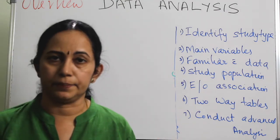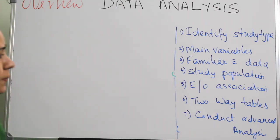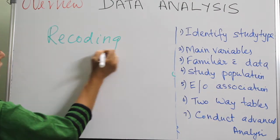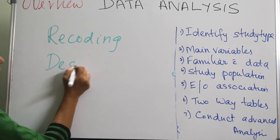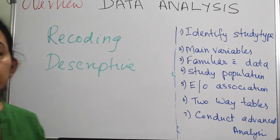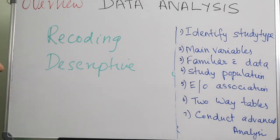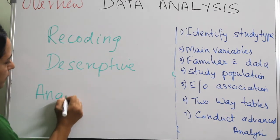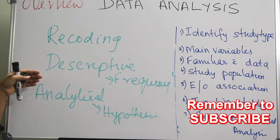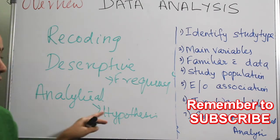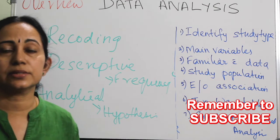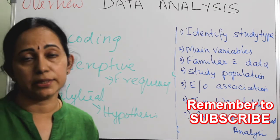Go step by step. The steps in a data analysis plan are: first, recoding; then descriptive analysis — looking for the frequency pattern of your variables; and then the analytic stage — looking for a measure of association. After that, you can go to either a univariate analysis, a stratified analysis, or a multivariate analysis.